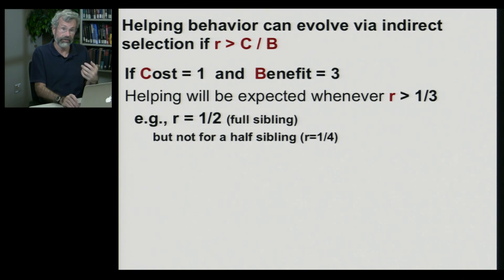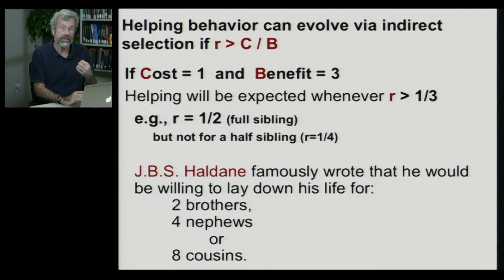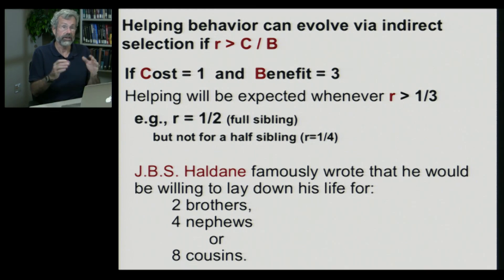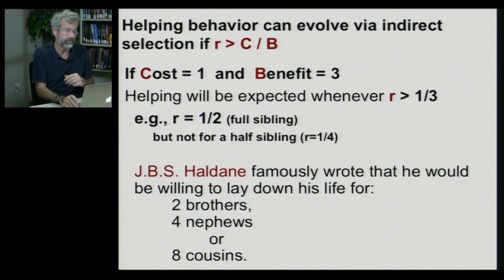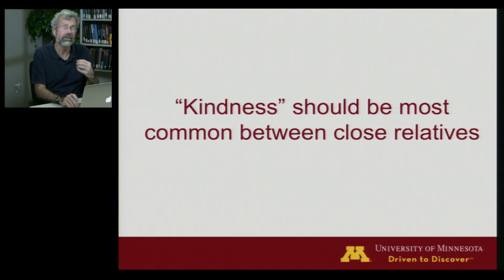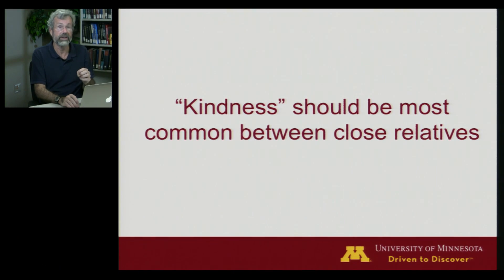This brings to mind a famous calculation by another British evolutionary biologist, J.B.S. Haldane, who said he'd be willing to lay down his life for two brothers, four nephews, or eight cousins. You're related to your brothers by one-half, so two full siblings are the genetic equivalent of you; four nephews are likewise the genetic equivalent; and eight full cousins would be the same. When we look for examples of altruism in nature, we expect kindness to be most common between close relatives.